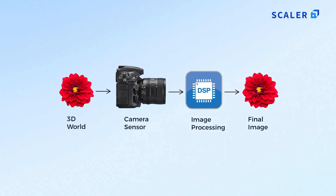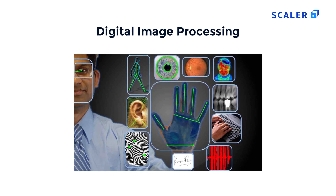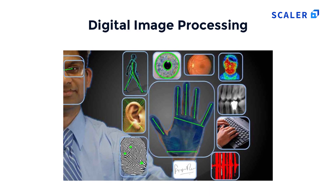In image processing, some operations are performed on an image or video frame. It is a type of signal processing in which an image or video frame is the input, and the output may be an image or characteristics and features associated with that image or video. Today, image processing is one of the rapidly growing technologies, forming a core research area within computer science and engineering. In simple words, image processing is the analysis and manipulation of a digital image to improve its quality.